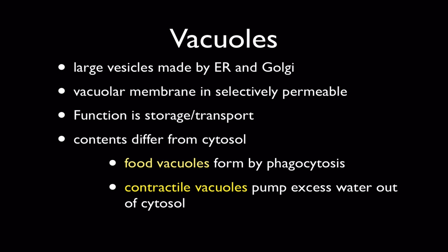Vacuoles are another part of the endomembrane system. They are large vesicles, again made by the ER and the Golgi, and they have a membrane containing proteins that makes them selectively permeable, so the cell can control what enters or exits. Their primary function is storage or transport of material. Depending on where the cell is located in the organism — plant or animal — vacuoles may have different functions and contain different substances.